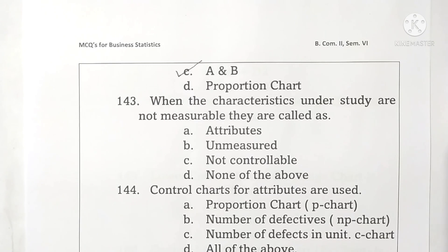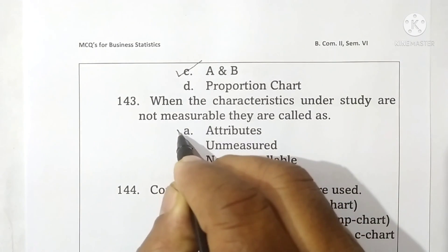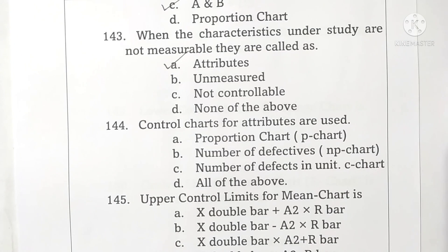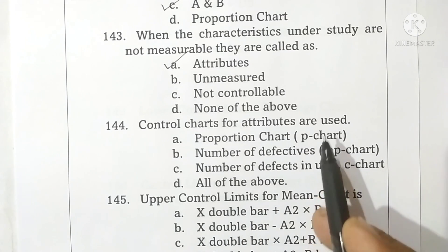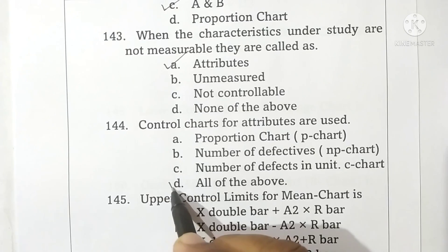Question 143: when the characteristic under study is not measurable, they are called attributes. Option A is correct. Question 144: control charts for attributes include the proportion chart (P chart), number of defectives (NP chart), number of defects per unit (C chart), and all of these. Option D is correct.